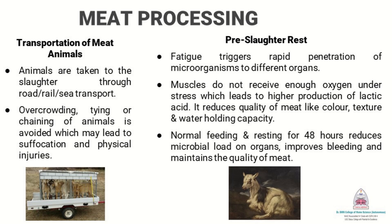After the animals reach the slaughterhouses, step number two is pre-slaughter rest. Fatigue is known to trigger rapid penetration of microorganisms to different parts of the body. Muscles that do not receive enough oxygen under stress leads to higher production of lactic acid, which reduces the quality of meat such as color, texture, and water holding capacity.